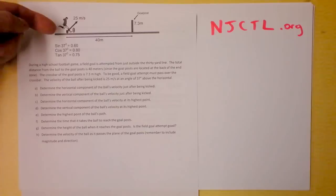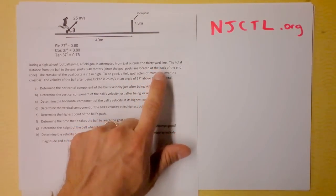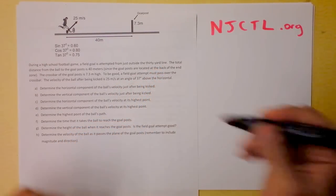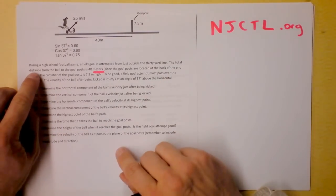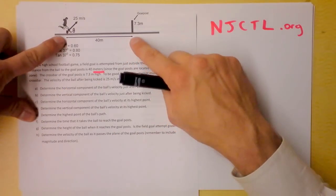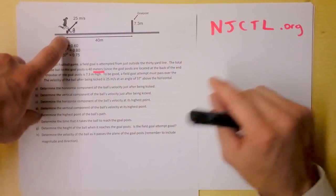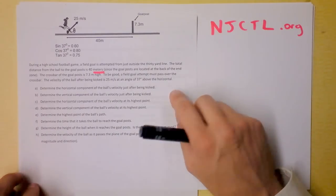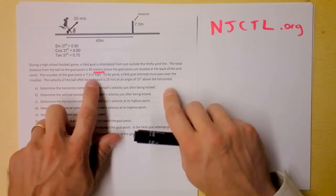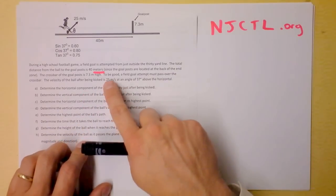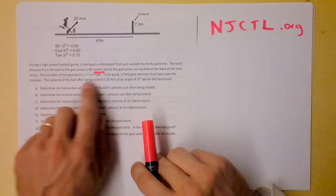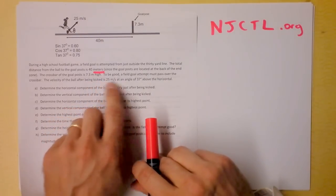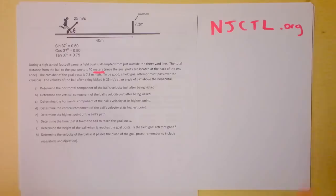Here's the problem. There's a high school football game with a field goal attempted from just outside the 30-yard line. We've converted to meters. The total distance from the ball to the goal post is 40 meters. The crossbar of the goal post is 7.3 meters high, and to be good, the field goal must pass over the crossbar. The velocity of the ball after being kicked is 25 meters per second at an angle of 37 degrees above the horizontal. I like 37 degrees because it gives a 3-4-5 triangle.